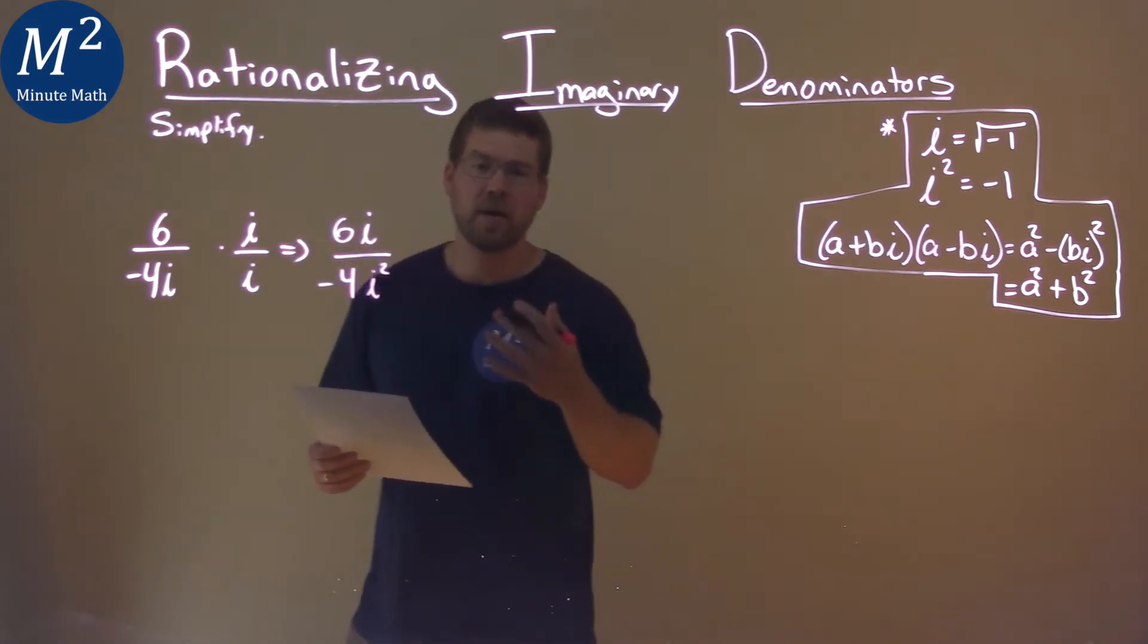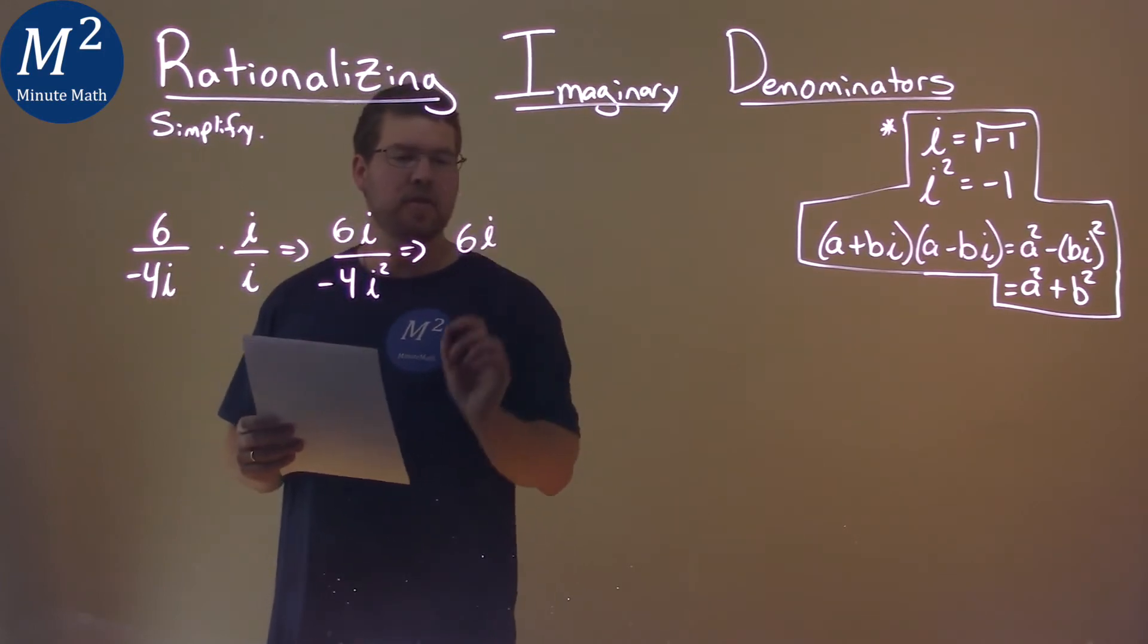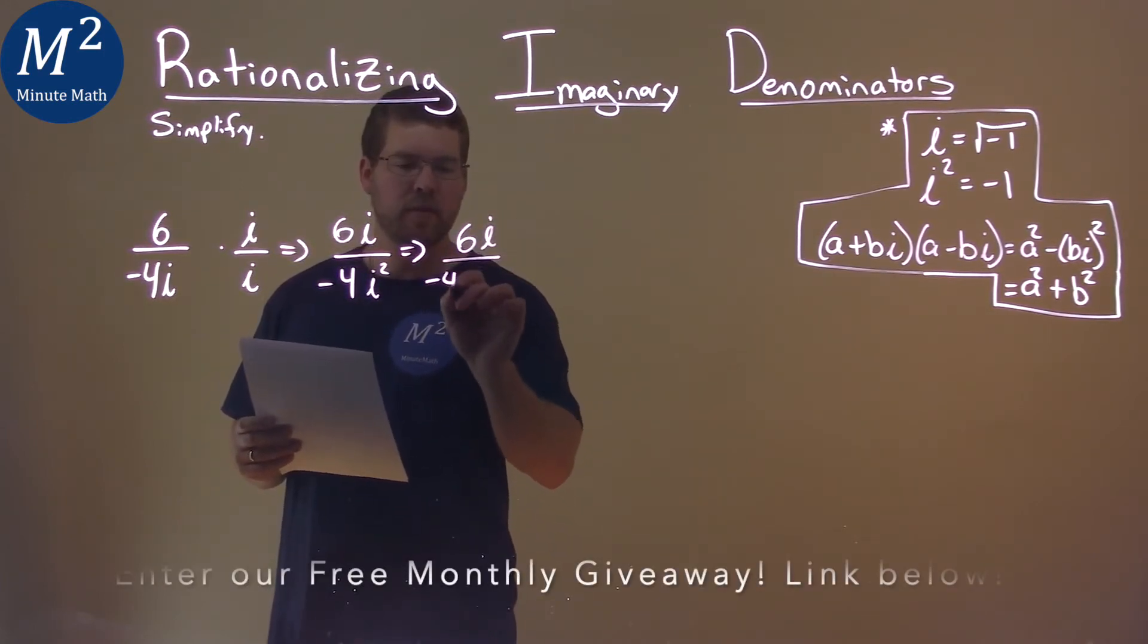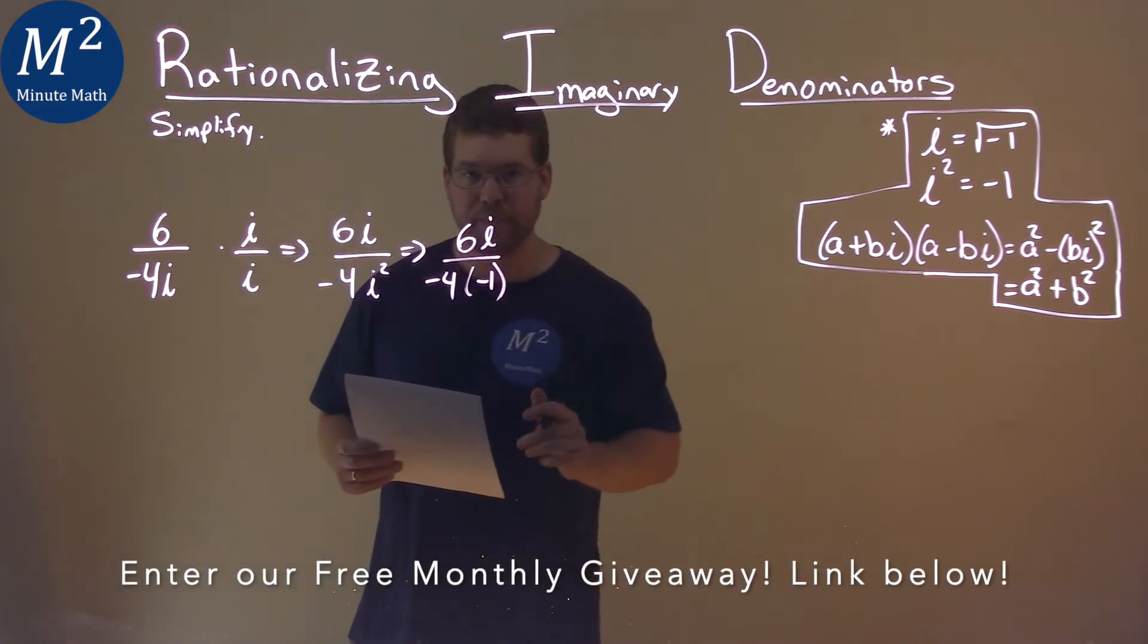And now we have to take our knowledge about imaginary numbers. What is i squared equal to? So 6i stays in the numerator, negative 4 down here, but i squared is negative 1.